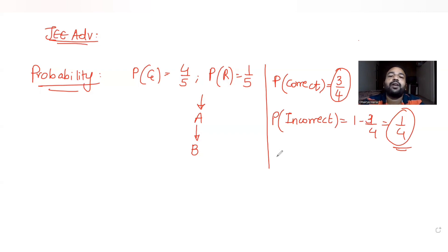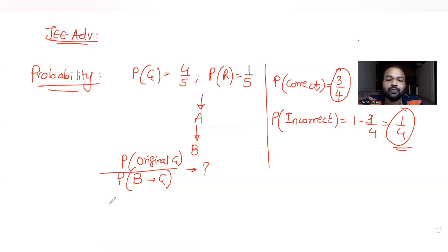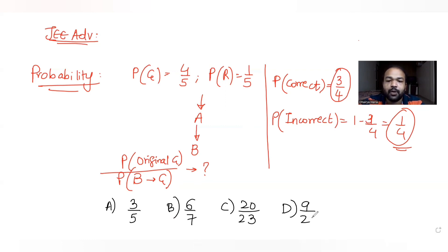Further, they have told us that the signal received at station B is green. So if B receives a green signal, we have to find the probability that the original signal was green — that is, the conditional probability of the original signal being green, given that B receives a green signal. There are four options: 3 by 5, 6 by 7, 20 by 23, and 9 by 20.